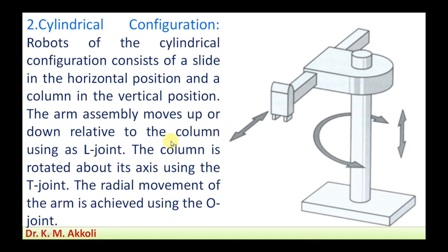The arm assembly moves up and down relative to the column using the L joint. The column is rotated about its axis using the T joint. The radial movement of the arm is achieved using the O joint, and the arm can move in the radial direction.